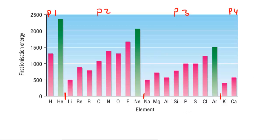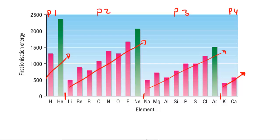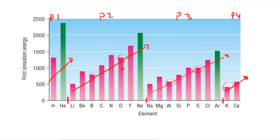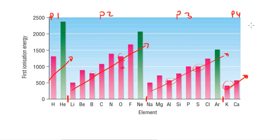In this video I'm going to be taking a look at the trend in first ionization energies as we go across four of the periods of the periodic table. I have period one, period two, period three, and period four labeled here. Looking at these bar charts we can see that there's a general increase as we go across each period. You might notice there are a couple of dips — this is to do with the stability relating to partially filled subshells, but I'm not going to go into that at A-level.